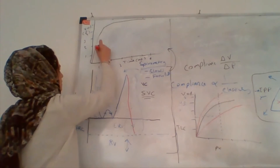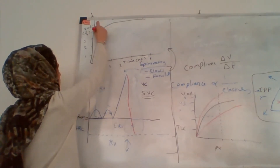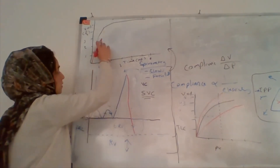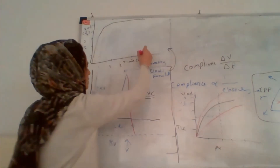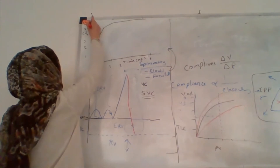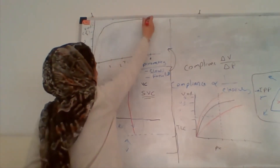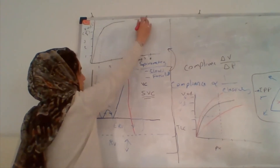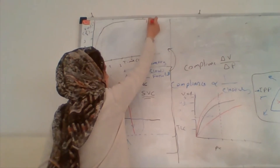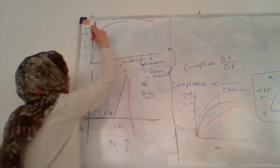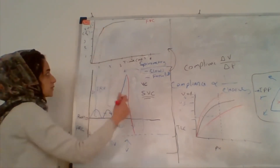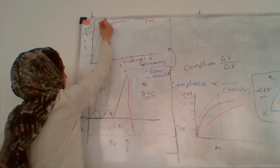In a normal person, most of the air expired will be expired in the first second. As you can see on the graph, within the first second, most of the air is expired — about 80% of the total. The total volume of air expired, for example 5.2 liters, is the FVC. The volume of air expired in the first second is called FEV1 — forced expiratory volume in the first second.